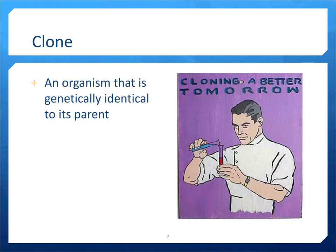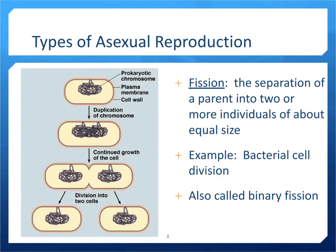Clones are organisms that are genetically identical to their parents, meaning they have the same DNA sequence. One type of asexual reproduction is called fission, where a parent separates into two individuals of about the same size. You start with one parent, they make a copy of their DNA, then pinch in half, resulting in two organisms identical to the original parent. This is how bacterial cell division works, and in bacteria it is specifically called binary fission.